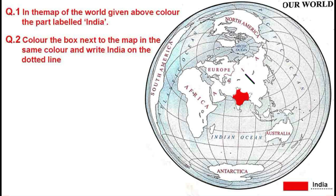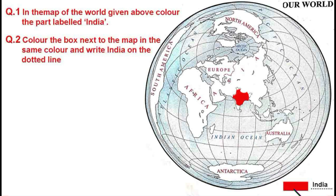Our continent is Asia — we live in the continent of Asia. This is our country's map shown here. The first question is: color the part labeled India in the world map — we have already colored it with red. For question two, color the box next to the map in the same color and write India on the dotted line. Color the box red as well, and write the name of our dear country — India.